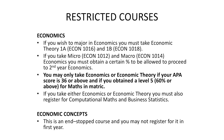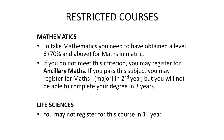Should you decide to do Economy Concepts, please note that this is an end-stop course and you may not register for it in the first year. If you select Mathematics, you need to obtain a Level 6, which is 70% and above, for Maths in Matric. If you do not meet this criteria, you may register for auxiliary Maths. If you pass this subject, you may register for Maths 1 and major in second year, but you will not be able to complete your degree in three years. Should you decide to take anything in the Life Sciences, please note that you may not register for this course in the first year.